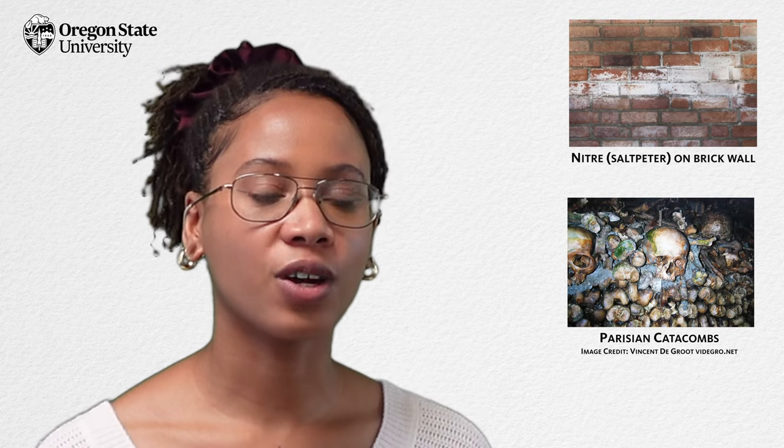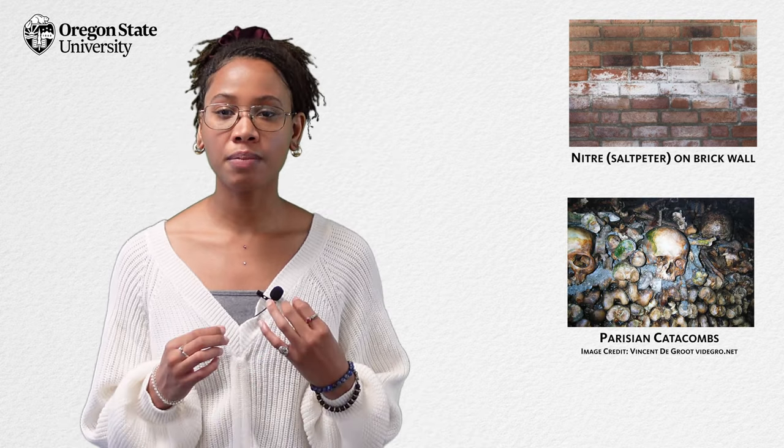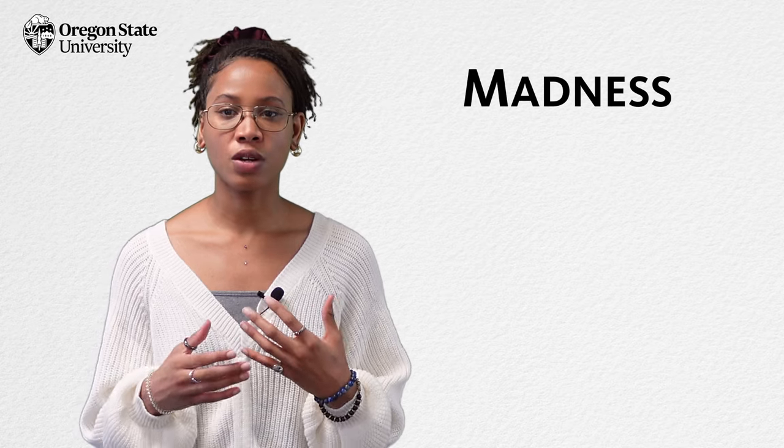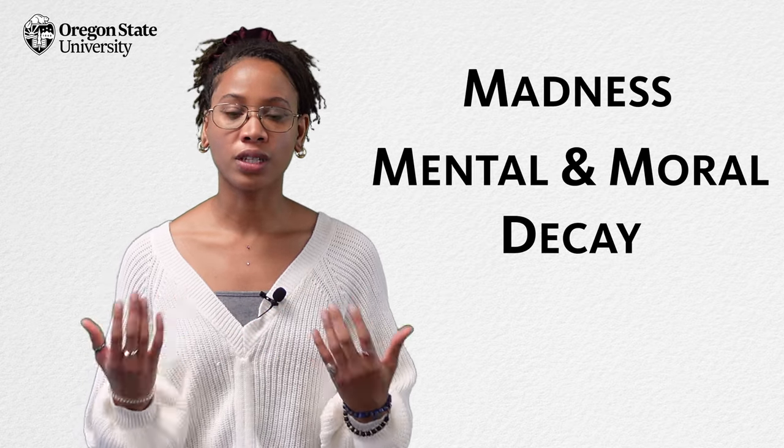One more example of a story that is rich with motifs is Edgar Allan Poe's "The Cask of Amontillado." The whole story is filled with decay — the nitre on the walls, the skeletons filling the catacombs. Death and decay is a common motif in gothic stories like this, and definitely ups the creepiness factor. It's a key part of setting the mood and feel of the story, as well as reinforcing the theme of madness or mental and moral decay.